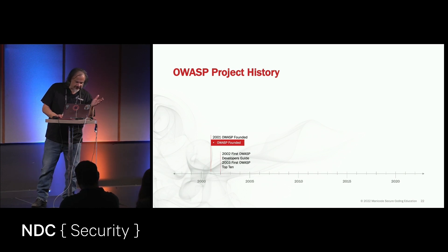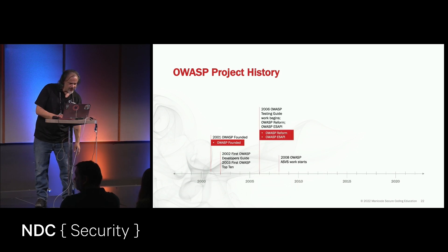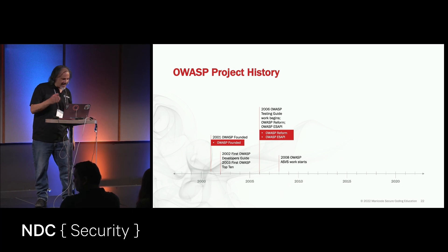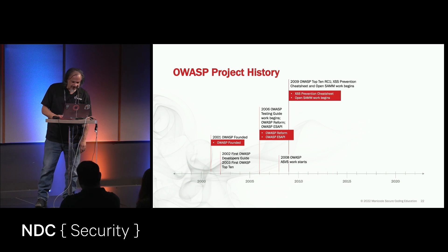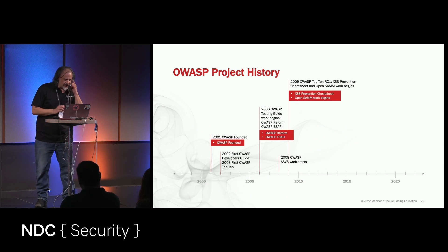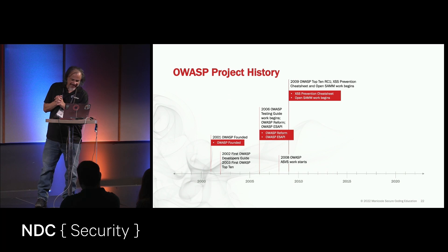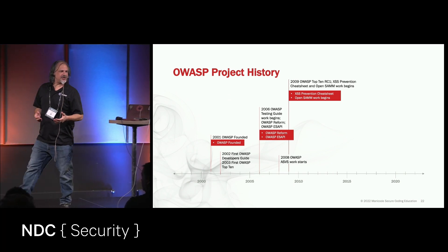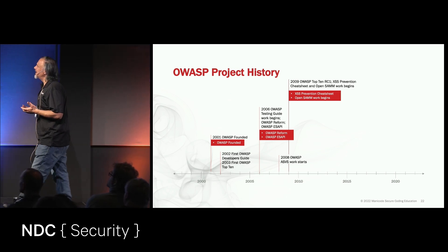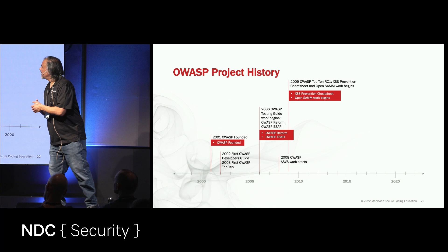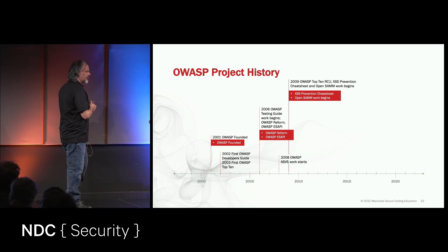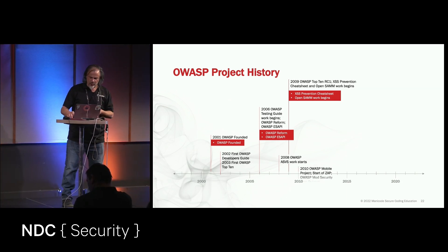By 2002, the Developer's Guide came out. By 2008, we have the beginning of the Application Security Verification Standard — the ASVS Standard. In 2009, we see the first OWASP Top 10 Release Candidate 1. The XSS Prevention Cheat Sheet is published by Jeff Williams — the most popular resource on OWASP ever visited. And we see the work of OpenSAMM, the Software Assurance Maturity Model — all open and free guides and tools.